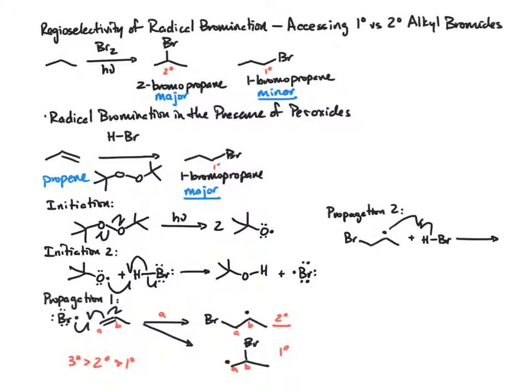We show the fishhooks, which indicate the movement of a single electron. We homolytically cleave the HBr bond.